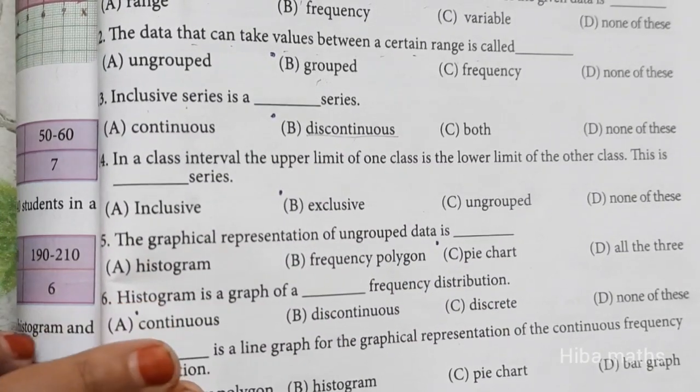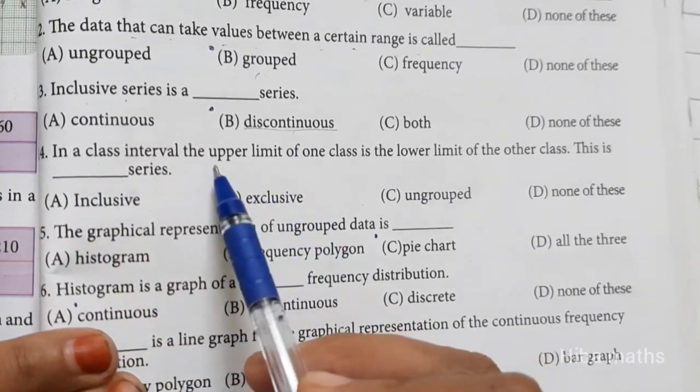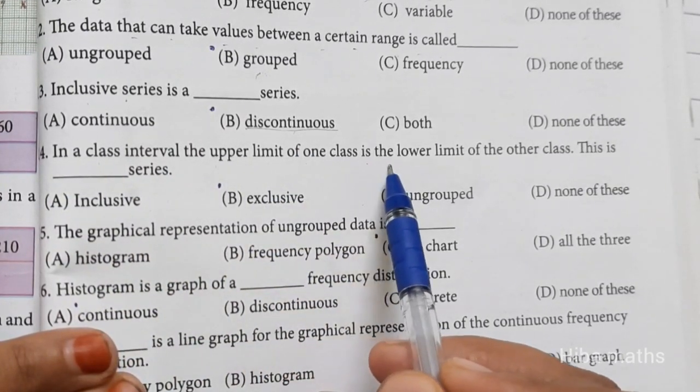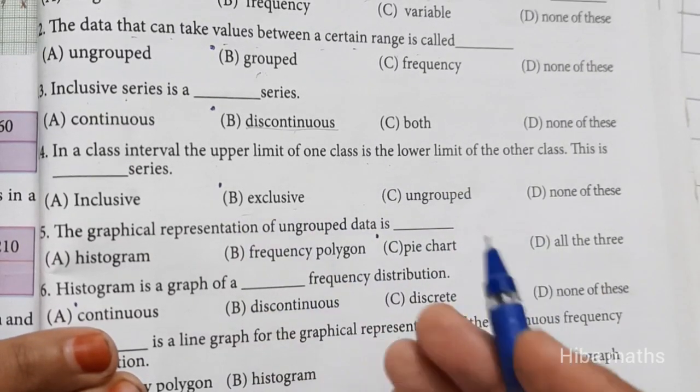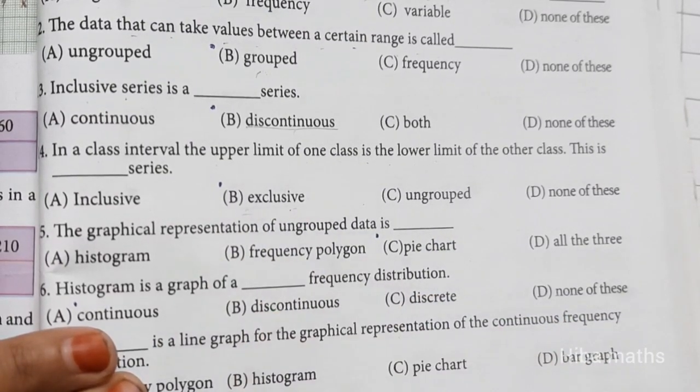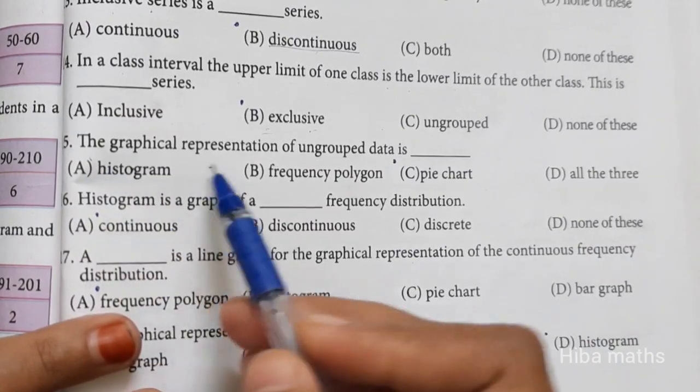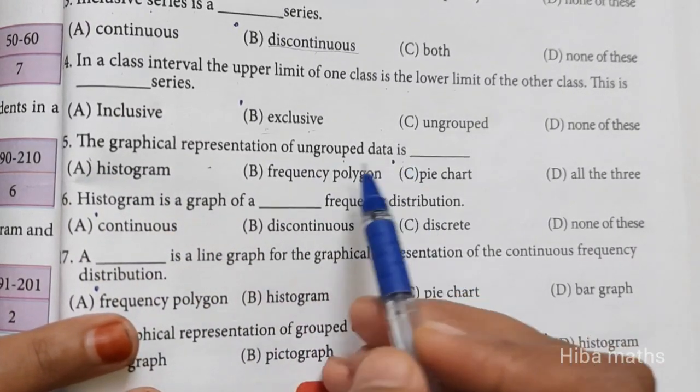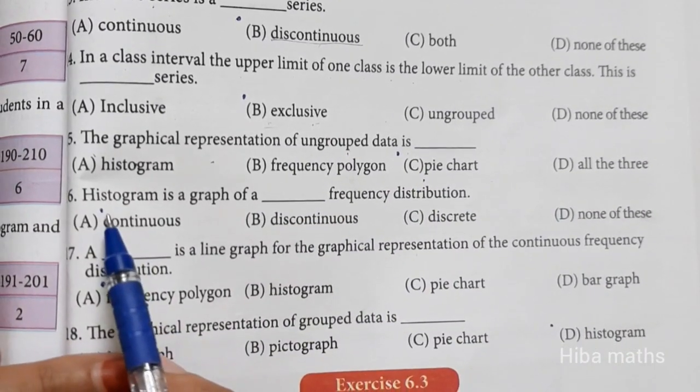The graphical representation of ungrouped data is histogram. Next, histogram.